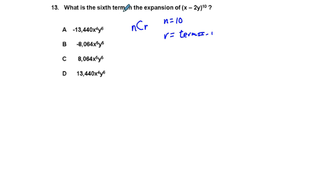And so when we want to find what R is, R is going to be equal to the sixth minus 1 or 5. So basically for our coefficient of expansion, we're looking at 10 choose 5 to get what that is.